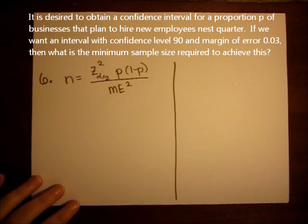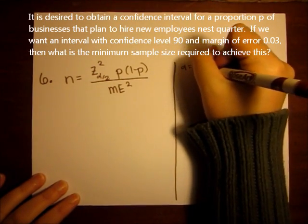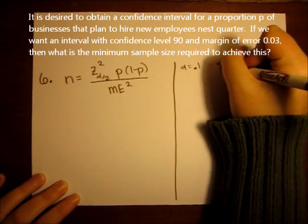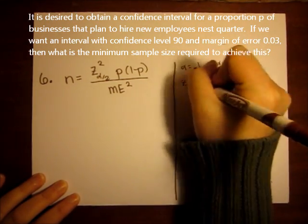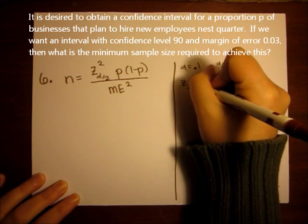So this time we're using a 90% confidence interval, so alpha is 0.1, alpha over 2 is 0.05, and z alpha over 2, z 0.05.